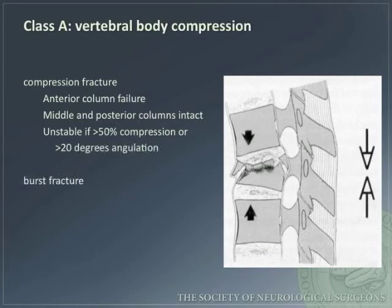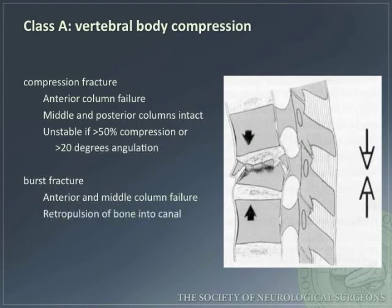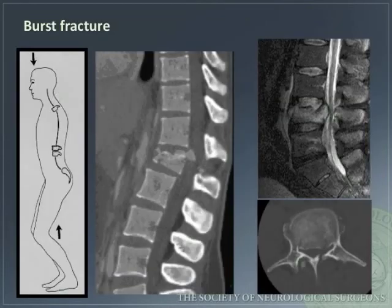A burst fracture involves anterior and middle column failure. Bone is retropulsed into the canal; consequently, these patients often have neurological deficits and are unstable. Here is a diagram and radiographic images demonstrating the mechanism of injury for burst fractures, with bone retropulsion and canal compromise.